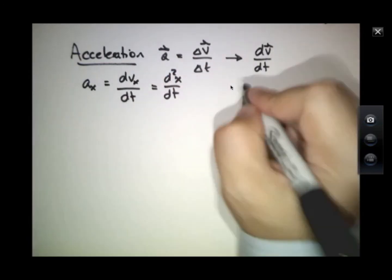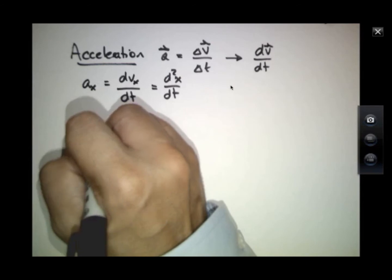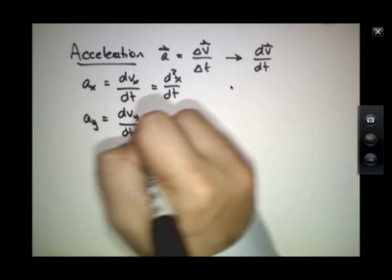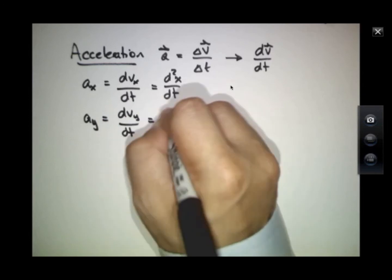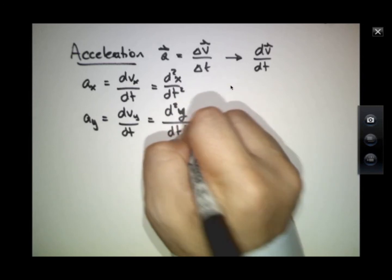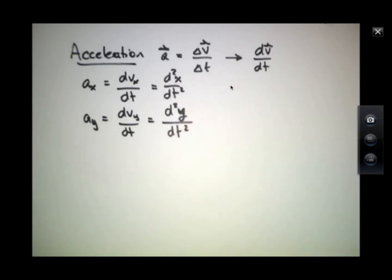where x is a function of time. A_y will equal dv_y/dt, or the second time derivative of y. So these, in general, are functions of time as well, depending on how complex the functions x and y are.